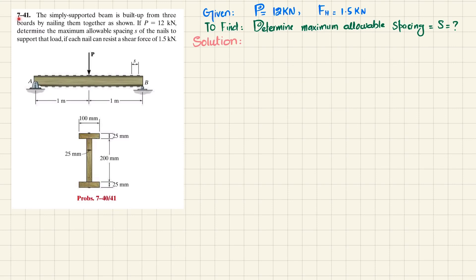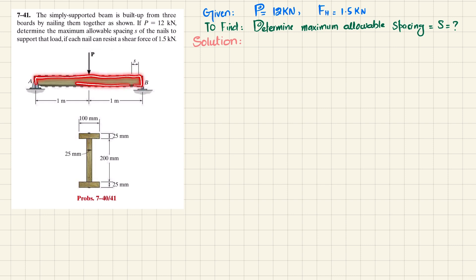Welcome back. Problem 7-41. The simply supported beam is built up from three boards by nailing them together as shown. If P is 12 kilonewton, determine the maximum allowable spacing s of the nail to support that load if each nail can resist a shear of 1.5 kilonewton. This is the beam AB, a simply supported beam having a point load at the mid, made of three boards that are nailed together. This is the cross section.